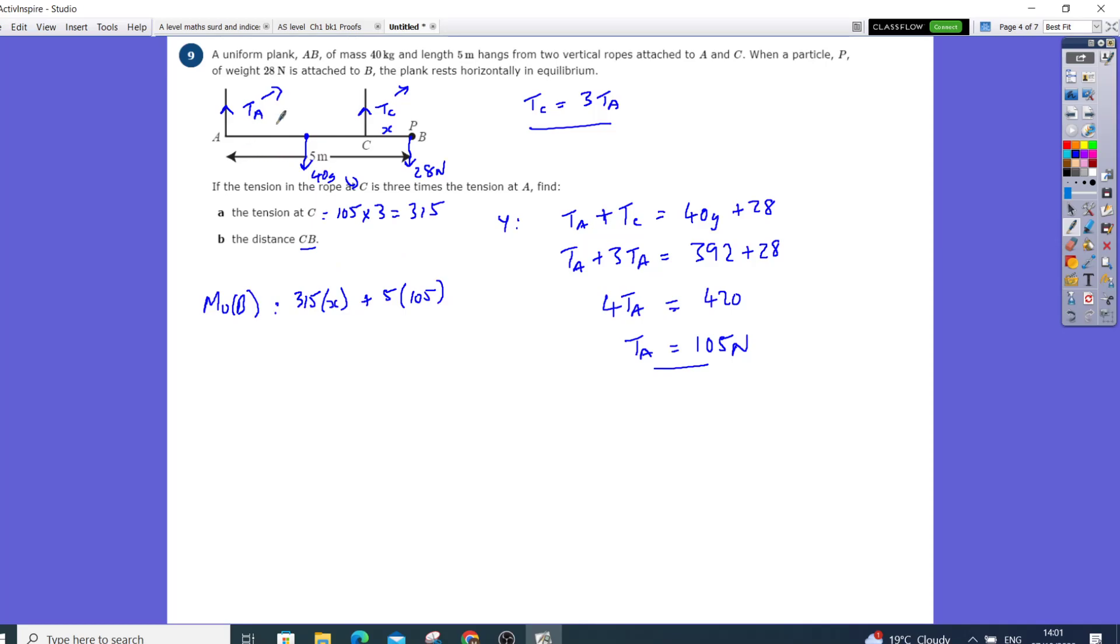So you're timing that by five, timing that by that. So they're going in that clockwise direction and that's balancing with, which is going to equal 2.5 and center of mass 40g. Okay, so let's just quickly work this out. So that's 315x plus now 105 times 5, it's going to give me 525, equals then I'm going to get 2.5 times 40 times 9.8, that's going to give me 980.